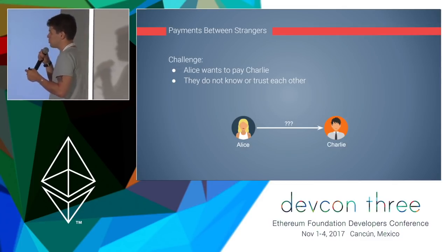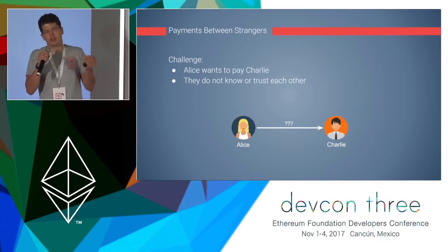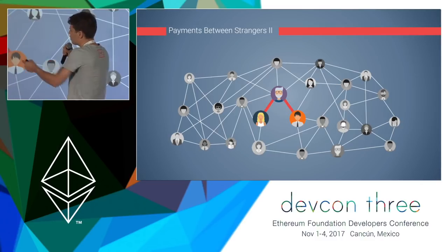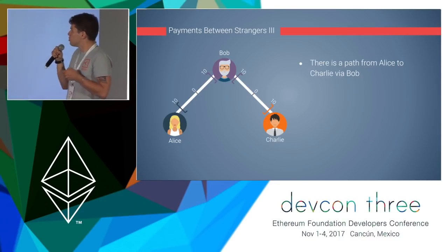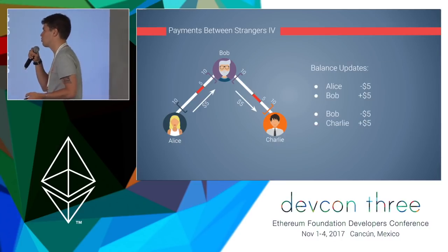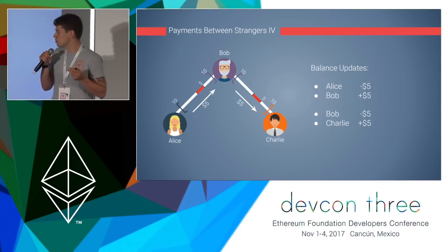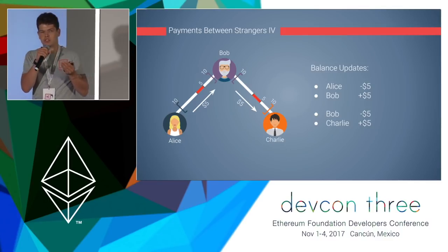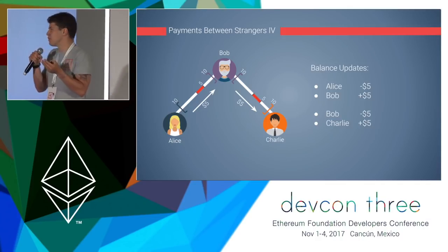What we need money for is when we have trust problems. If Alice wants to pay Charlie, she has the issue that Charlie does not care about her IOU because Charlie doesn't know or trust her. So going back to the payment network, Alice could discover a path of connecting trust lines that would allow her to back the IOU with someone Charlie would trust. There is a path connecting trust lines between Alice and Charlie. Alice spends five of her $10 credit line with Bob, and then Bob spends five of his $10 credit line with Charlie. This allows Charlie to receive payment from someone he can trust, and allows Alice to pay a stranger.